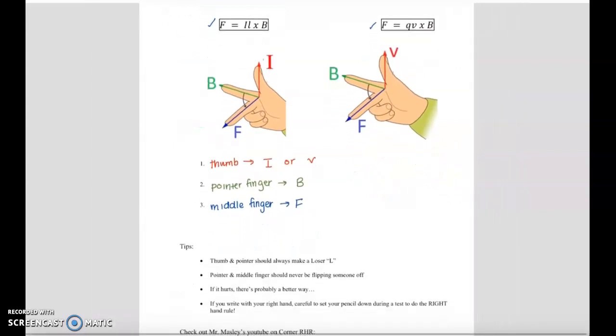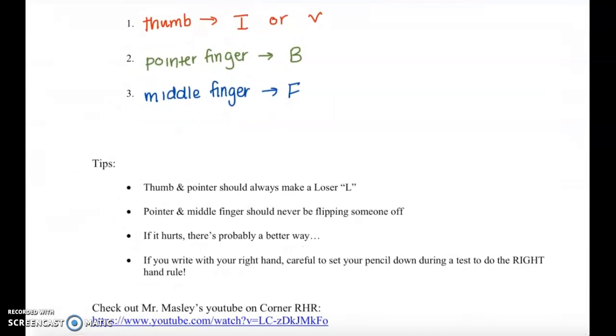I have a couple tips while you're doing this, just to make sure that you're doing it correctly. Your thumb and your pointer finger should always be making an L shape. I remember this when I was a kid. We used to tease each other and say like loser with the L. So your pointer finger and your thumb should always be making an L shape. Your pointer and your middle finger should never be in a way where you're actually like flipping someone off. I know it sounds kind of silly. So like your pointer finger should be pointing up and your middle finger should be like kind of towards the palm side. My next tip is if it hurts, there's probably a better way. And what I mean is sometimes as we're going to do problems, you're going to twist your wrist and try to force things to happen. And if you get into such a twist where it's not working, take a step back and there's usually a better way that this shouldn't be a painful exercise.